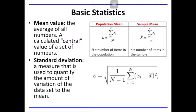We have the mean value and the standard deviation. The mean value is the average of all the measurements. It is essentially the central value in a given set of numbers, or in a given set of measurements in the context of chemical analysis. The formula for population mean is this one, and for the sample mean is designated by x with a bar on top of it. Standard deviation, on the other hand, is a measure used to quantify the amount of variation of the data set to the mean — how much each individual measurement varies from the mean.